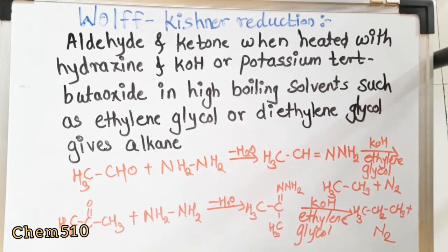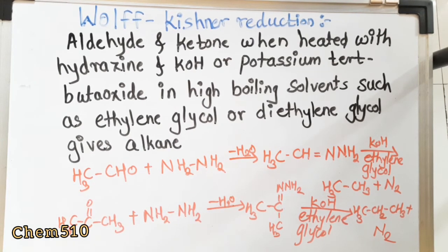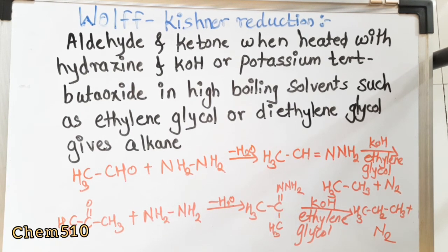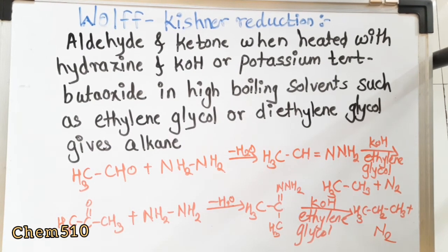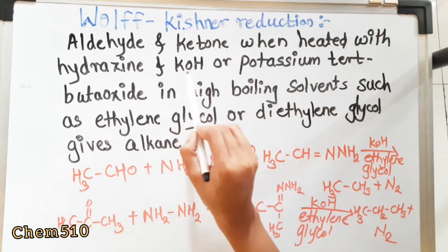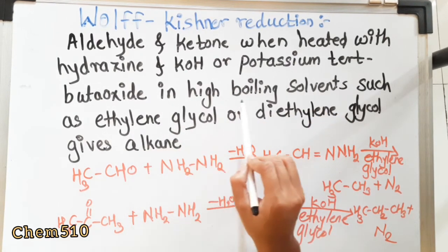The Wolff-Kishner reduction is similar to Clemmensen reduction. In this reduction, aldehydes and ketones are also converted into alkanes. In Clemmensen reduction, zinc amalgam and concentrated HCl are the catalysts, but in Wolff-Kishner reduction, hydrazine and KOH (or potassium tertiary butoxide) are the catalysts. The statement is: aldehydes and ketones, when heated with hydrazine and KOH or potassium tertiary butoxide in a high-boiling solvent such as ethylene glycol or diethylene glycol, give alkanes.